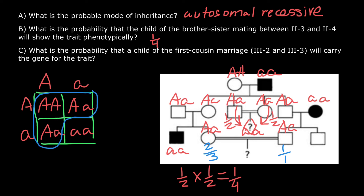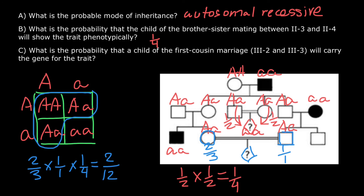Now our calculations are as follows: the probability that the mother of the child is a carrier is two thirds; the probability that the father of the child is a carrier is 100%, or one over one. Two carriers would have one quarter of their progeny with the small a, small a genotype, so we multiply by one quarter. Two times one times one is two in the numerator, and three times one times four is twelve in the denominator — giving us two over twelve, which simplifies to one over six.